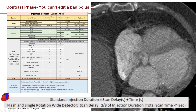We have several injection strategies here at Stanford Healthcare. We use a quick sheet to reference contrast injection strategies. Our standard injection duration equals our scan times and scan delays — that's the strategy to get contrast into the target area. We also use a sub-second scan mode for flash mode or single rotation wide detector mode, where scan delays equal two-thirds of injection duration. We never use this if scan times are more than four seconds.